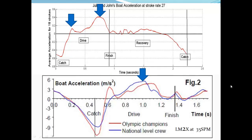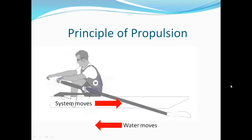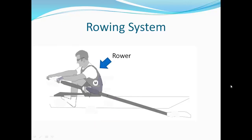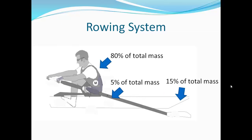The two peaks is a common feature of boat acceleration curves for the fastest crews. The basic principle of rowing is quite simple: momentum is transferred to the water by the oar, causing the water to move in one direction while the system moves in the opposite direction. Although the blade appears to lock on in the water, it must move the water in the opposite direction to the motion of the system in order to conserve momentum. The rowing system as a whole includes the rower, the boat, and the oars. The rower's mass accounts for about 80% of the total mass, the boat's mass about 15%, and the oars the remaining 5%.